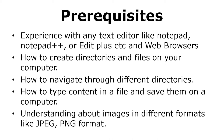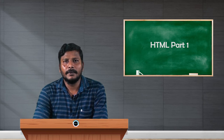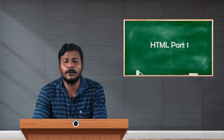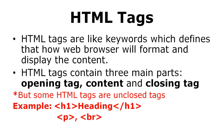In HTML, the language is used to format text on a web page. It contains a set of elements called HTML tags. HTML tags are like keywords in other programming languages, used to define the formatting of particular content. To use tags in HTML there is a rule: an HTML tag must contain three main parts — an opening tag, the content, and a closing tag.